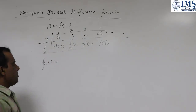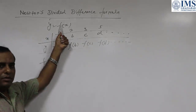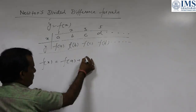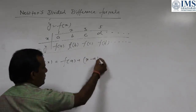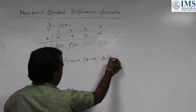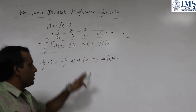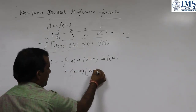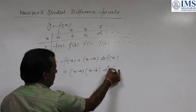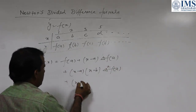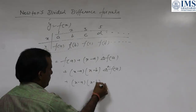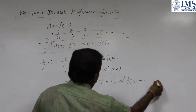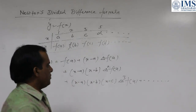So what is the formula? If we want to calculate the value of y, that is f(x), for any value of x, then it will be: f(a) plus (x minus a) times the first divided difference of f(a), plus (x minus a)(x minus b) times the second divided difference of f(a), plus (x minus a)(x minus b)(x minus c) times the third divided difference of f(a), and so on.